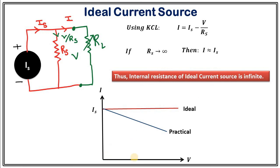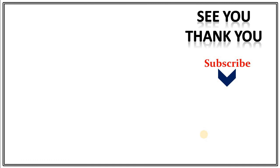If you draw the graph for ideal and practical current sources with the change in voltage: for the ideal current source the current will always be constant at Is, and for the practical current source there is a decrease in current. To summarize: internal resistance of an ideal voltage source is zero, and internal resistance of an ideal current source is infinity. In practical life, for an ideal current source the internal resistance should be much much greater than the load resistance, and for an ideal voltage source the internal resistance should be much much less than the load resistance.